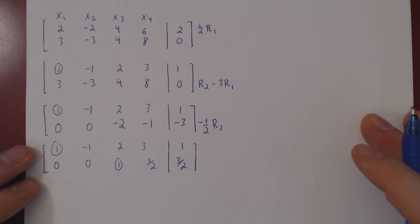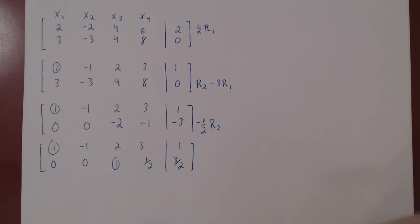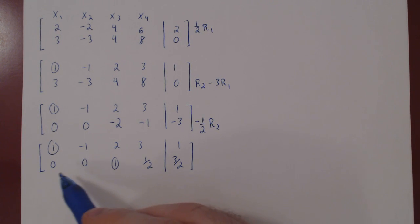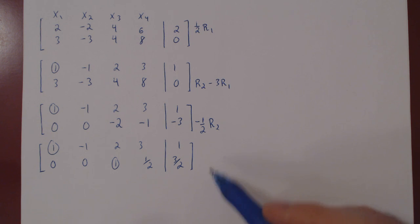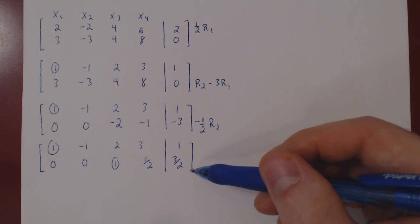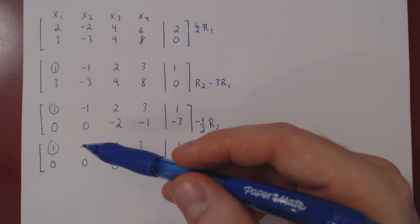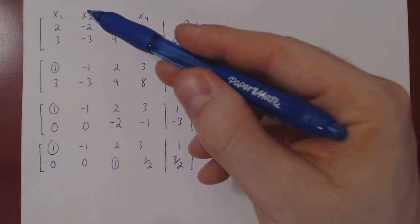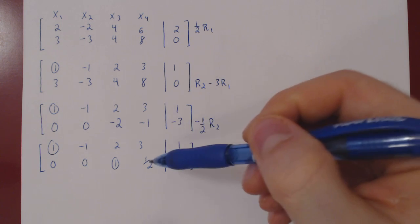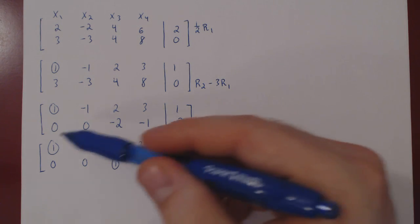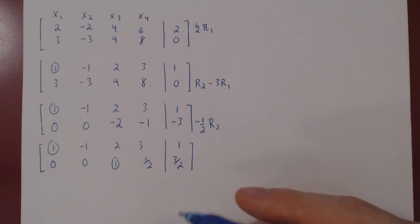And now we are done with Gaussian elimination. We have reached the final row of our augmented matrix. The matrix now is in a row echelon form. But if you notice, two variables are actually free. x2 is free, x4 is free. Because we have free variables, we will now apply Gauss-Jordan elimination.